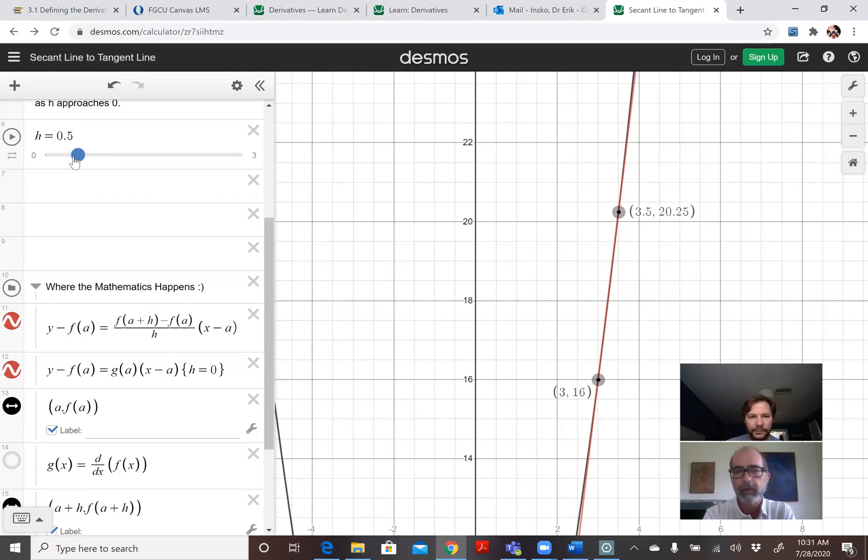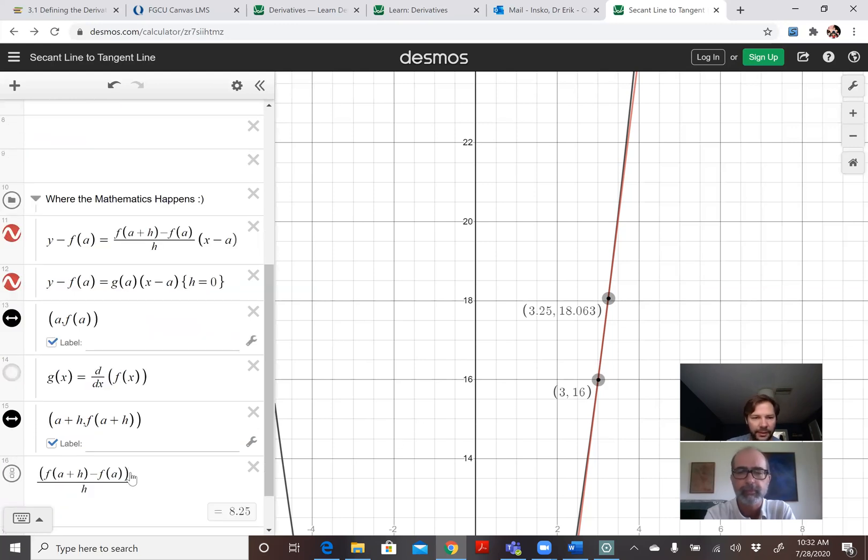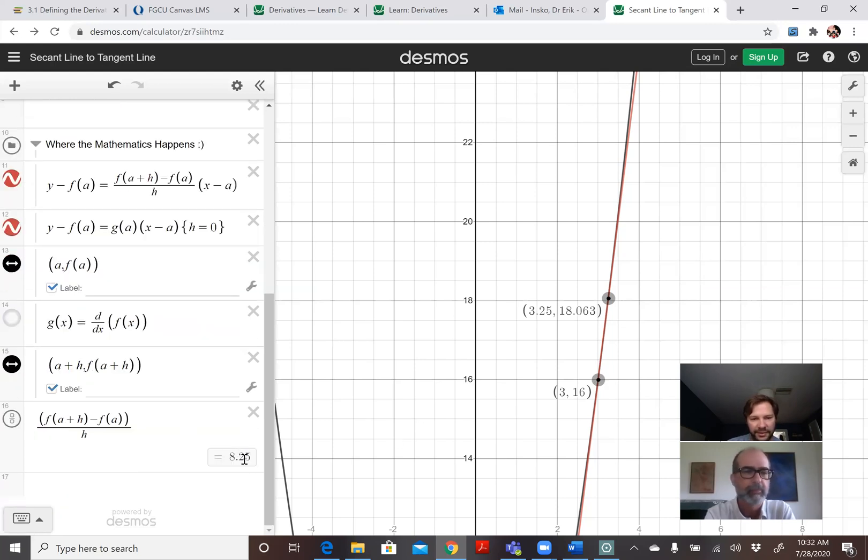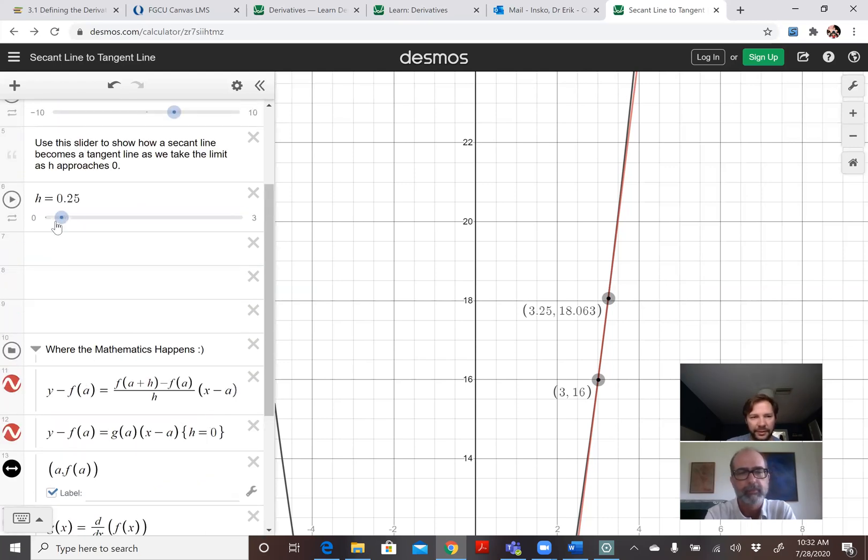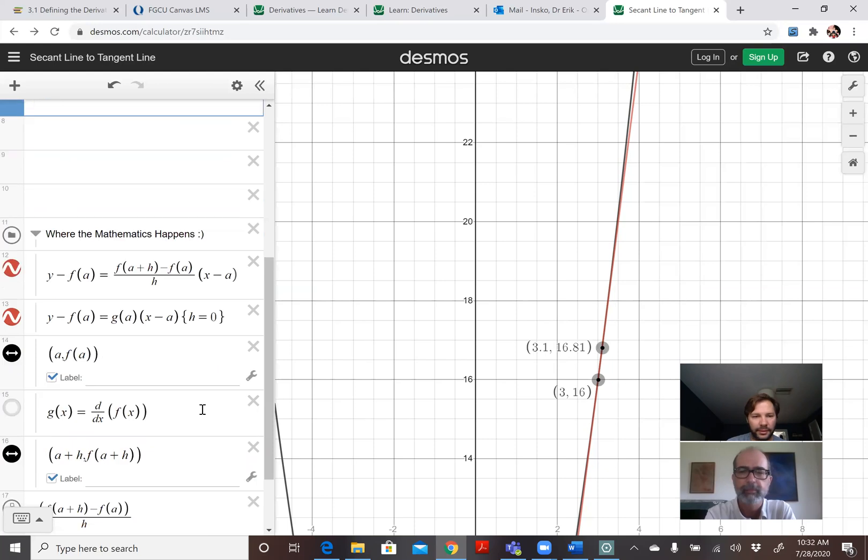So why don't you make the second point a little bit closer to that (3, 16)? Okay, so I can slide it in, maybe make it 3.25. That would be the h value there. The difference would be 0.25, and then it gives us a slope of 8.25. So we went from 8.5 down to 8.25. Maybe if I just type in a value like 0.1, then we get a value of 8.1.